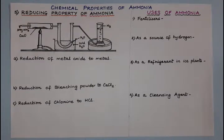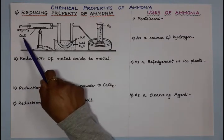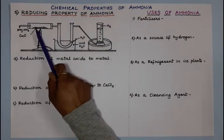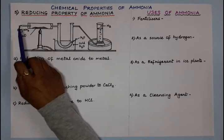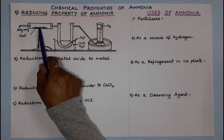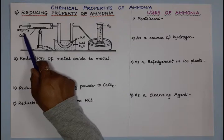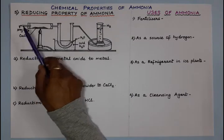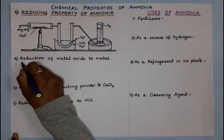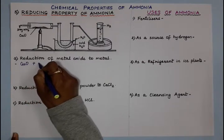The last chemical property of ammonia is the reducing property. To understand this, we look at an experiment where cupric oxide, which is black in color, is taken. Ammonia being a reducing agent, dry ammonia gas is passed into a combustion tube where black-colored cupric oxide has been placed and preheated. When these two react, the metal oxide is reduced to metal.